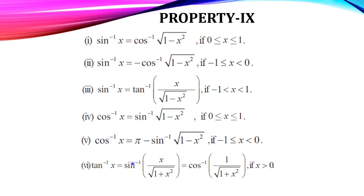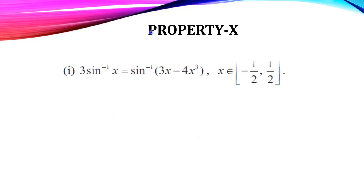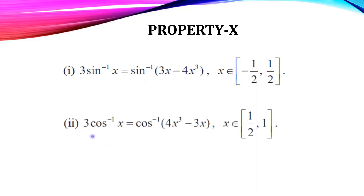Triple angle formulas: 3 sin inverse x = sin inverse(3x − 4x³), for all x belonging to the closed interval [−1/2, 1/2] — proved using the triple angle formula. Similarly, 3 cos inverse x = cos inverse(4x³ − 3x), for all x belonging to the closed interval [1/2, 1].